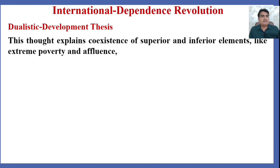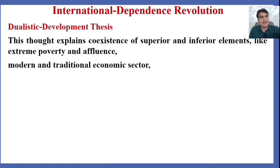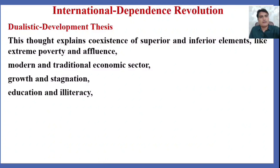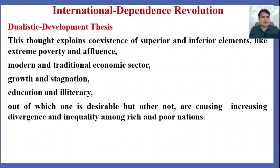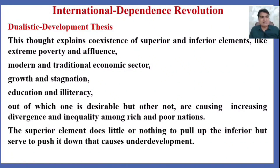This thought explains the coexistence of superior and inferior elements — like extreme poverty and affluence, modern and traditional economic sectors, growth and stagnation, education and illiteracy — of which one is desirable but the other is not. These are causing increasing divergence and inequality among rich and poor nations. The superior element does little or nothing to pull up the inferior, but rather pushes it down, causing underdevelopment.